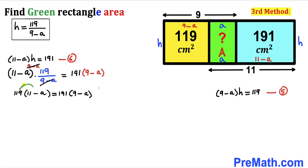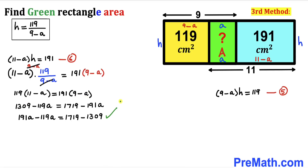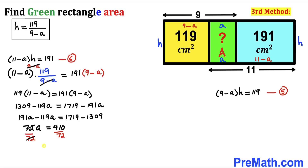Distributing gives 1309 − 119a = 1719 − 191a. Moving the 'a' terms and constants to opposite sides and simplifying: 72a = 410. Dividing both sides by 72, a = 410/72 = 205/36.